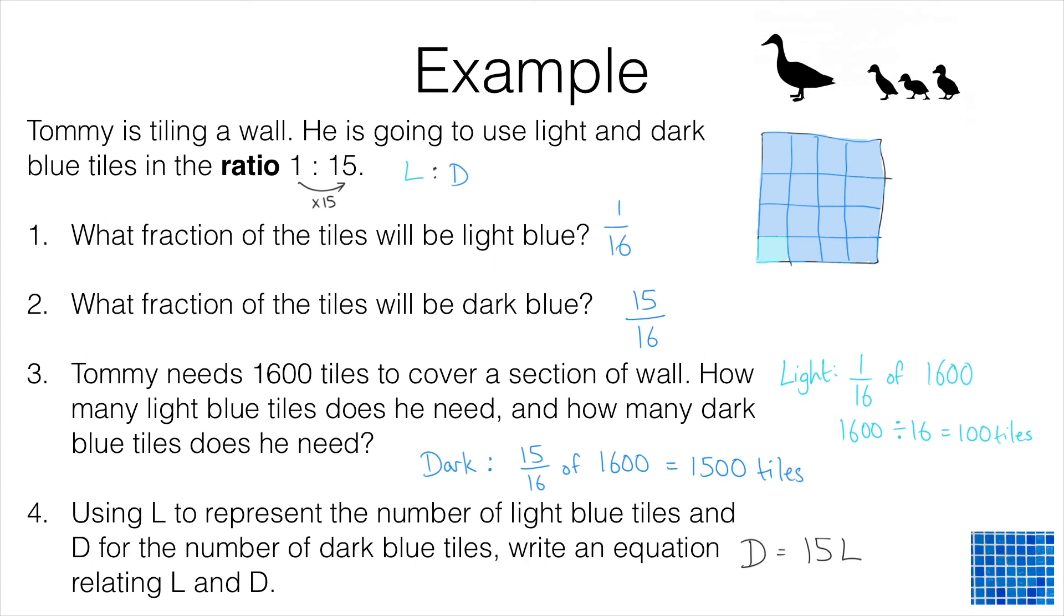So what that's telling us is that the number of dark tiles is 15 times the number of light tiles, which is L. D equals 15L. That is a correct equation relating the number of light and dark tiles together.